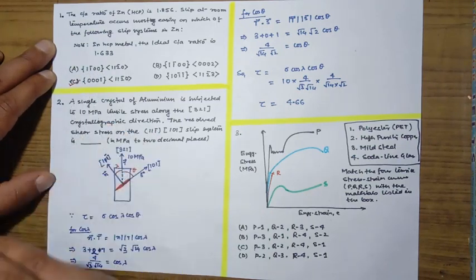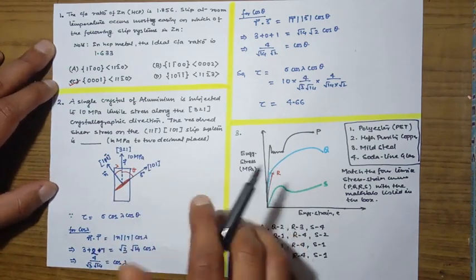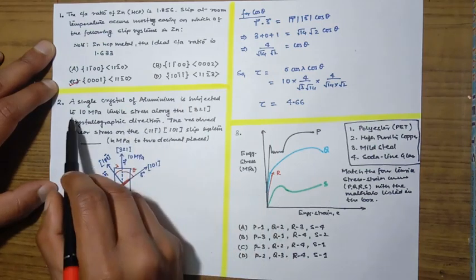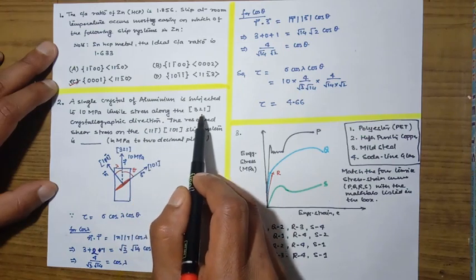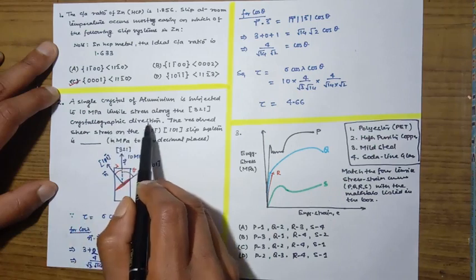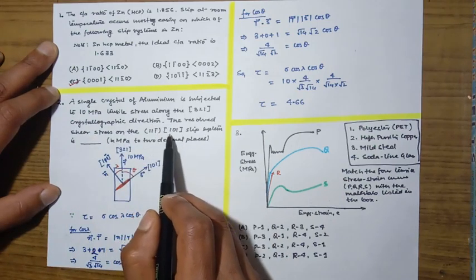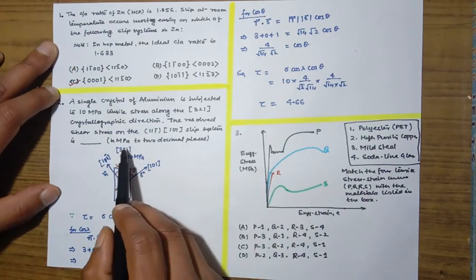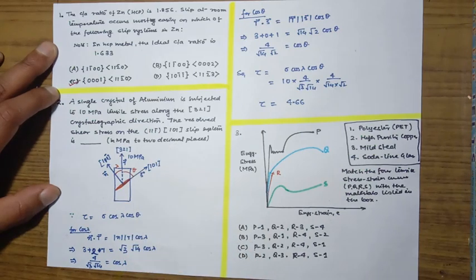The correct answer is option C. Next question: a single crystal of aluminium is subjected to 10 MPa tensile stress along the [321] crystallographic direction. The resolved shear stress on the (1 1̄ 1)[101] slip system is to be calculated in MPa up to two decimal places.